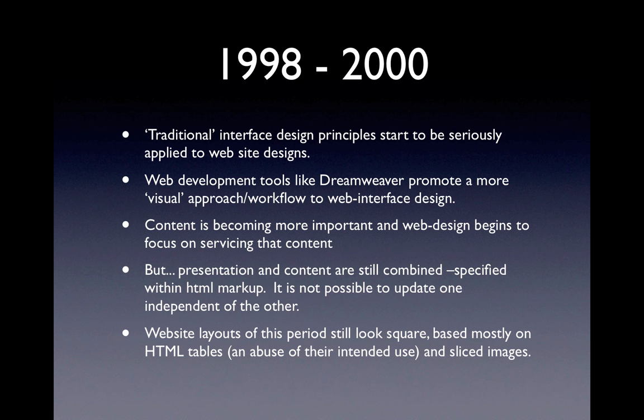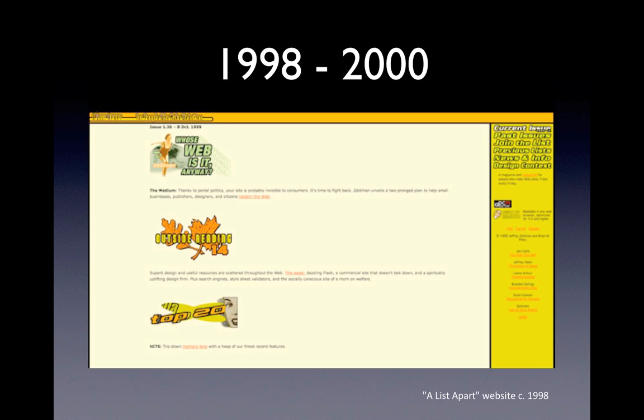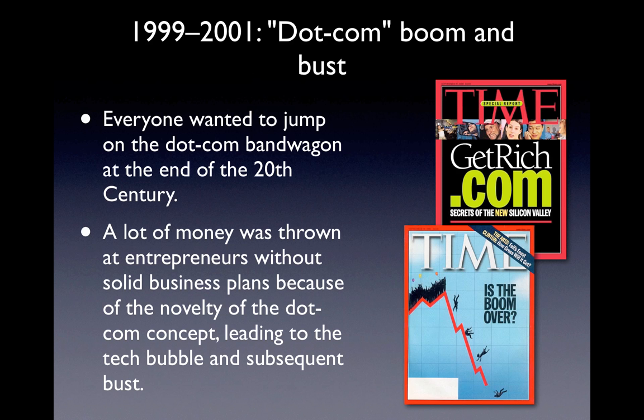Without things like CSS for layout, the only way to lay out content on the page was to create a grid with an HTML table and put the content in it — essentially an abuse of their intended use. Website layouts from this period look square because they're based mostly on HTML tables. This is a screenshot of the A List Apart website from around that era — very much grid-related, and you can picture exactly where the grid lines of the table cells were.